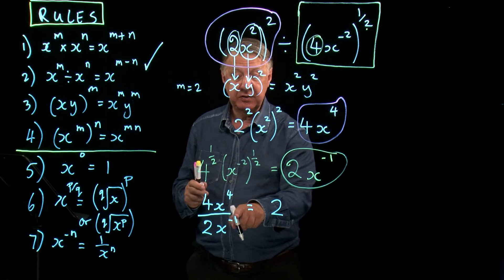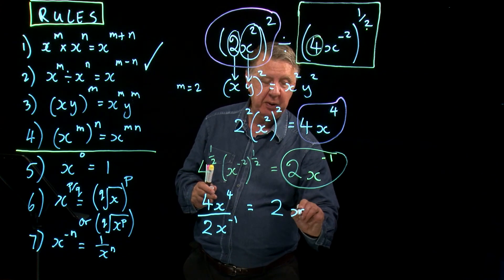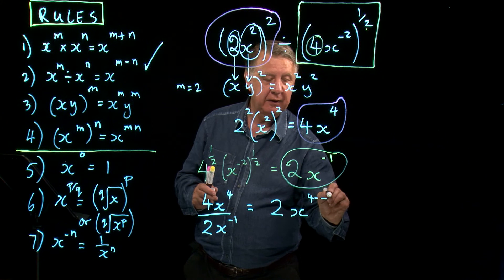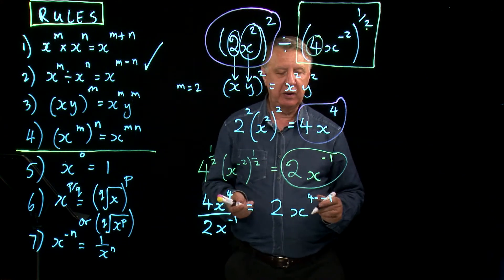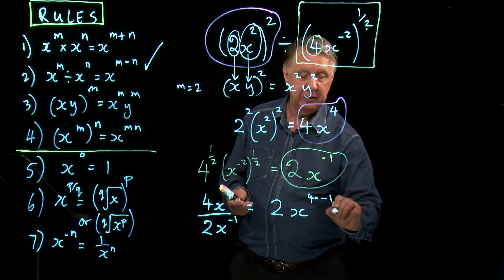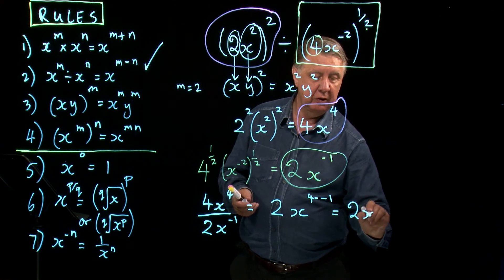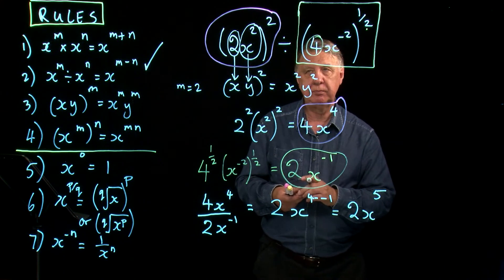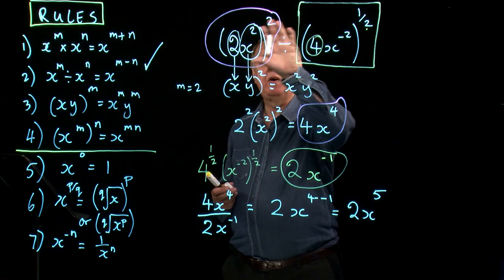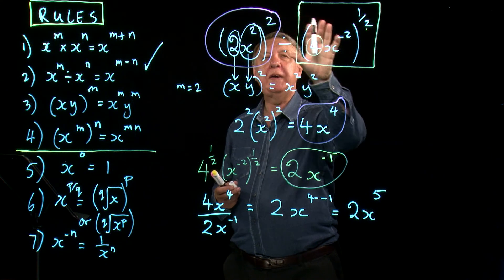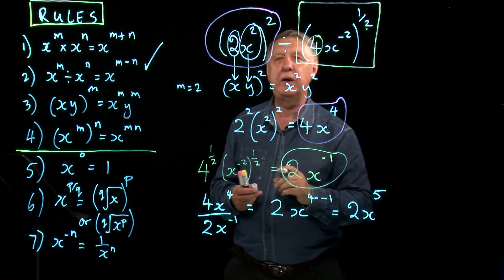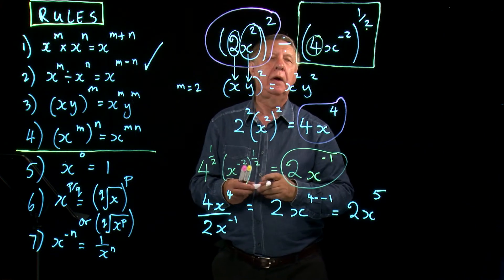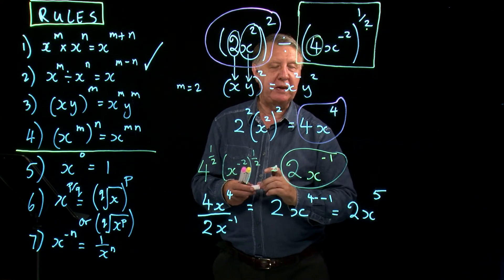One of the powers is negative, so it's x to the power 4 take away negative 1. 4 add 1 is 5. So that turns into 2x to the power 5. Okay, so I've simplified this quite complicated looking expression and made it look much easier.